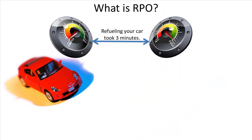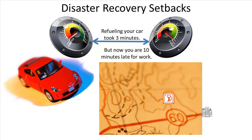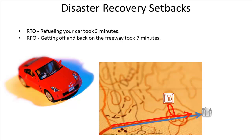There's a term called RPO. Let's walk through an example: refueling your car takes three minutes, and you discover on your way to work you don't have enough fuel. You refuel but arrive 10 minutes late — even though your recovery only took three minutes. Getting off the freeway and back on took another seven minutes. This means three minutes was spent on the Recovery Time Objective, or RTO, and seven minutes on the Recovery Point Objective, or RPO.